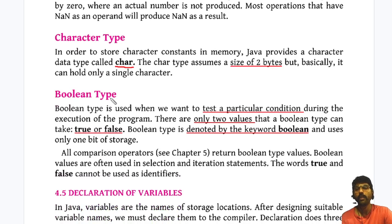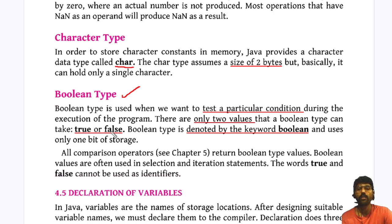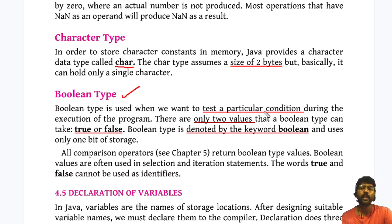The next one is called the boolean type. This is a new type available in Java, which is not available in C and C++. A boolean type is used to test a particular condition during program execution. Its value is always either true or false — boolean has only two values. It is indicated by the keyword boolean.